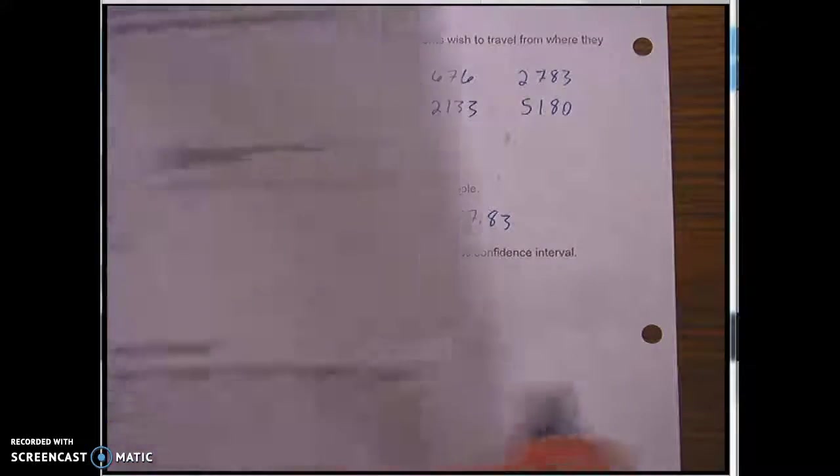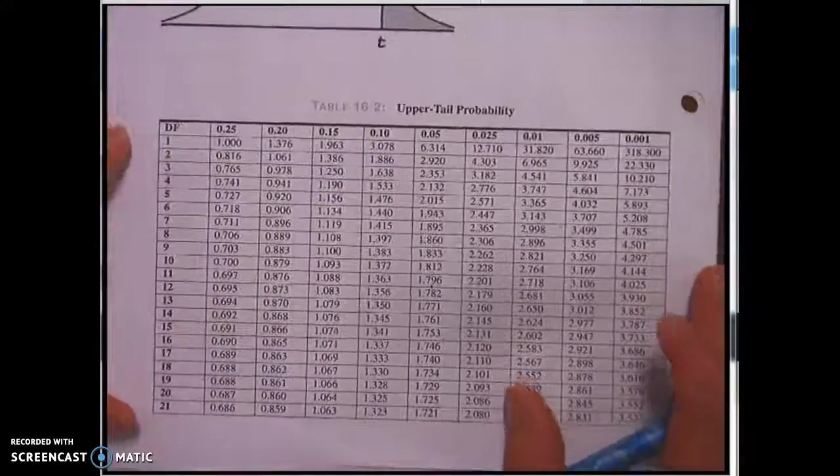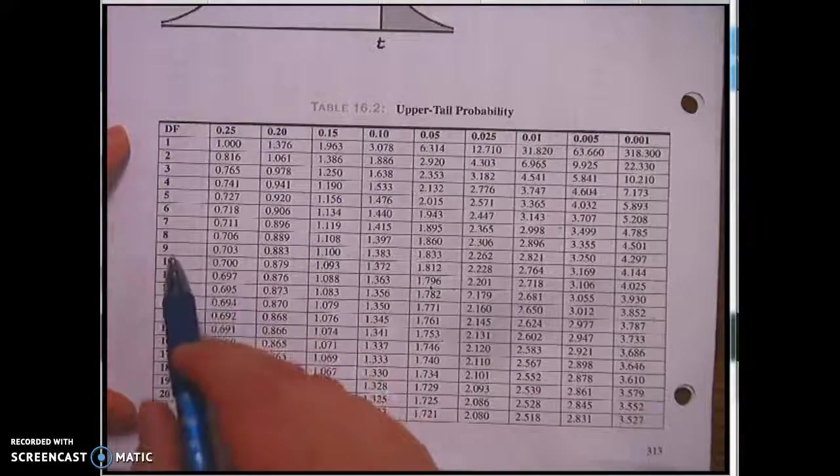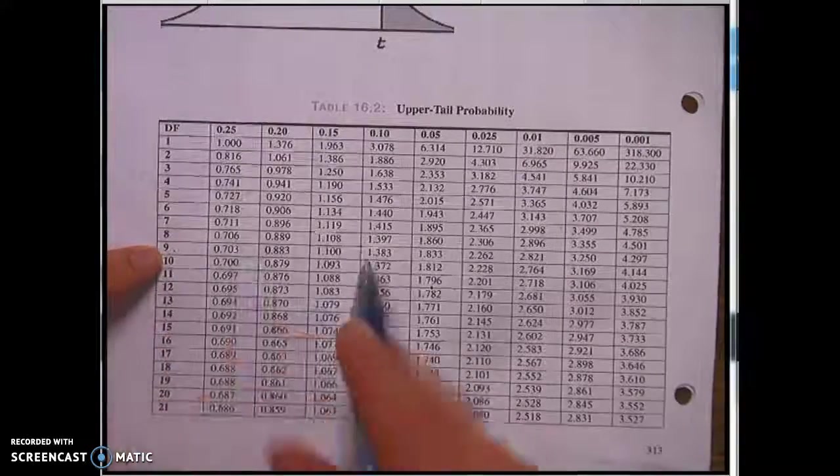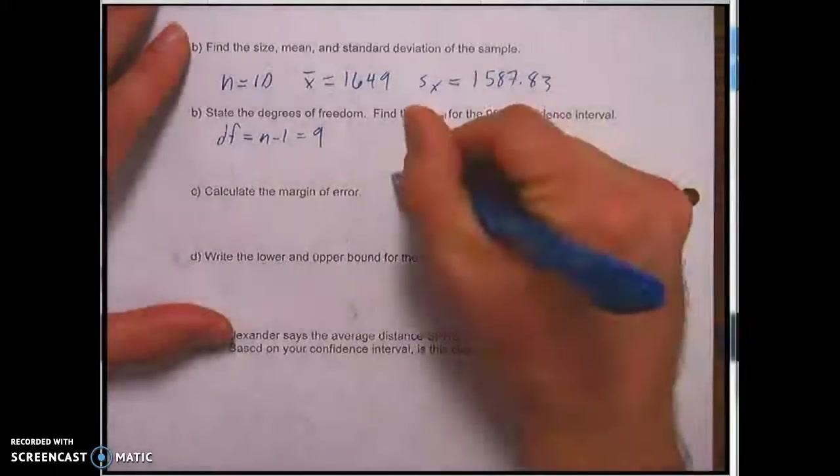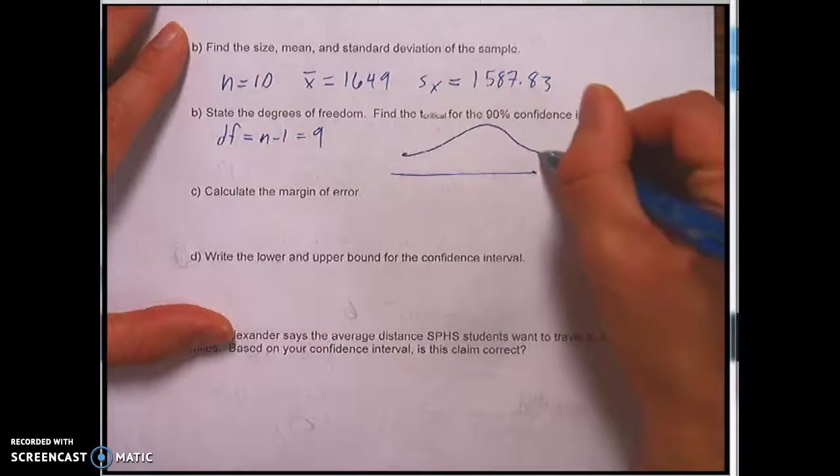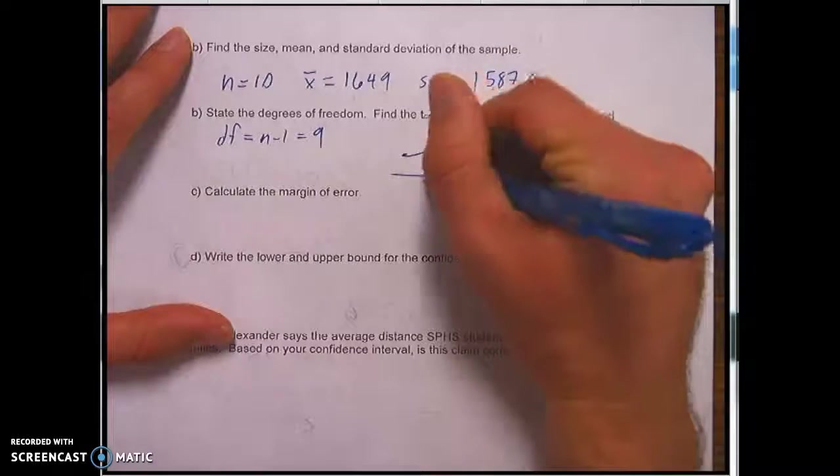So, to get the t critical here for a 90% confidence interval, we're going to use the chart. Now, start at degrees of freedom equals 9. Go to the right. We're trying to do a 90% confidence interval. So what that means, if I'm doing a 90% confidence interval, here's 0.